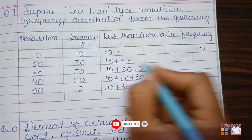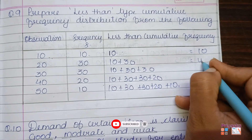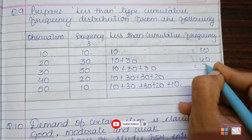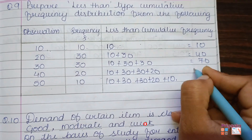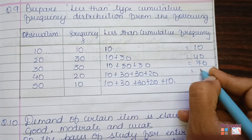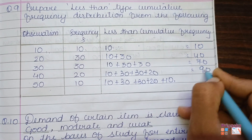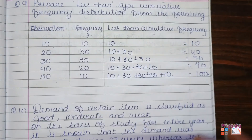Now just compute the total to find your cumulative frequency. That is: 10, then 10 plus 30 is 40, here comes 70, here comes 90, and at the end 100.